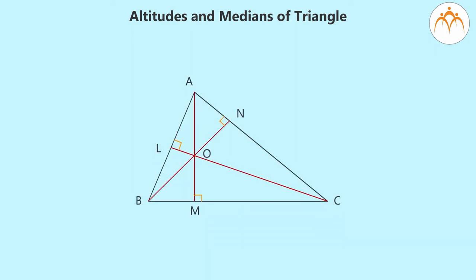Let us use set square and draw all the three altitudes in triangle ABC. What do we see? All three altitudes of triangle ABC are concurrent. That is, they pass through a common point O. This point is called as orthocentre of triangle ABC.